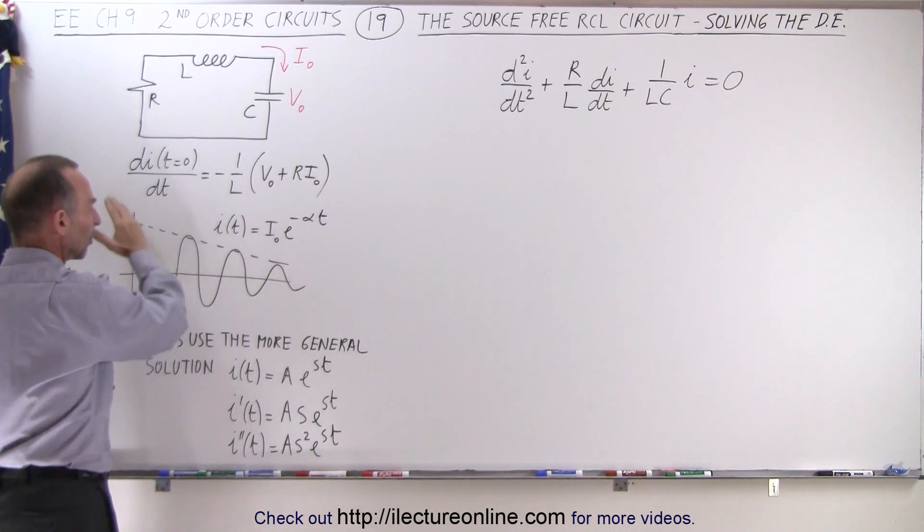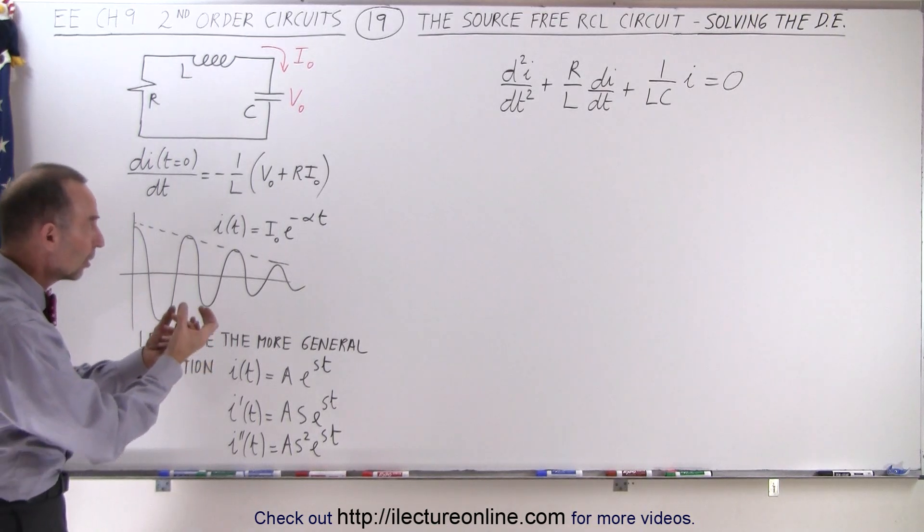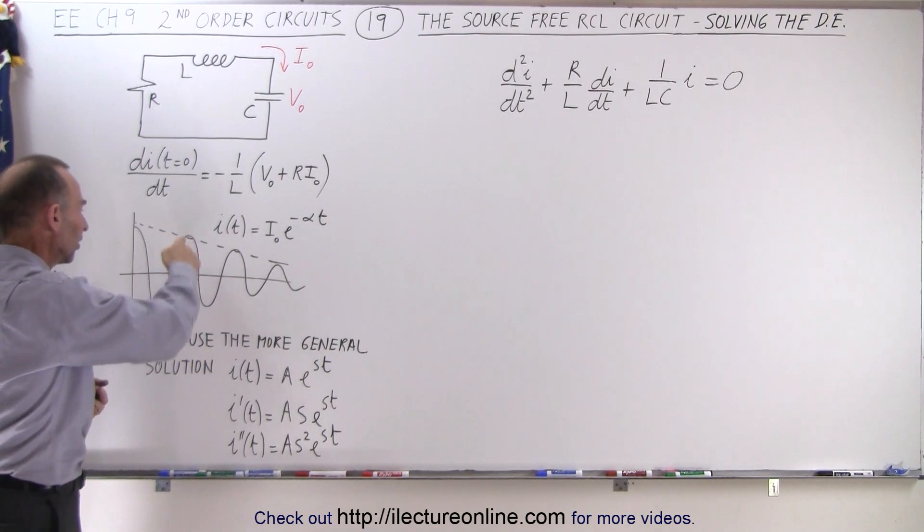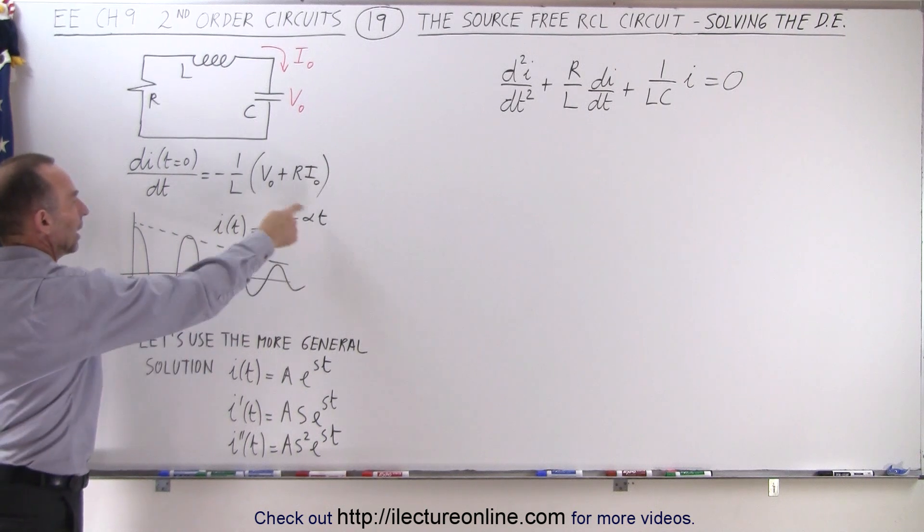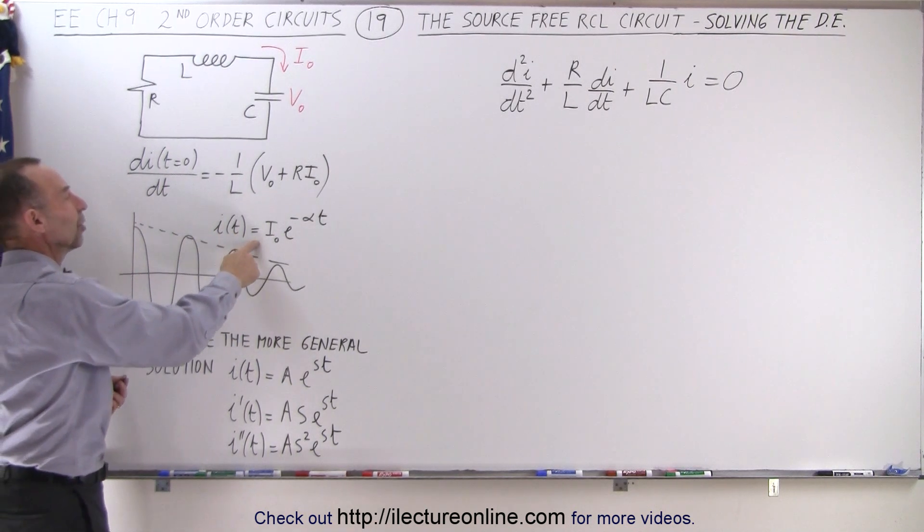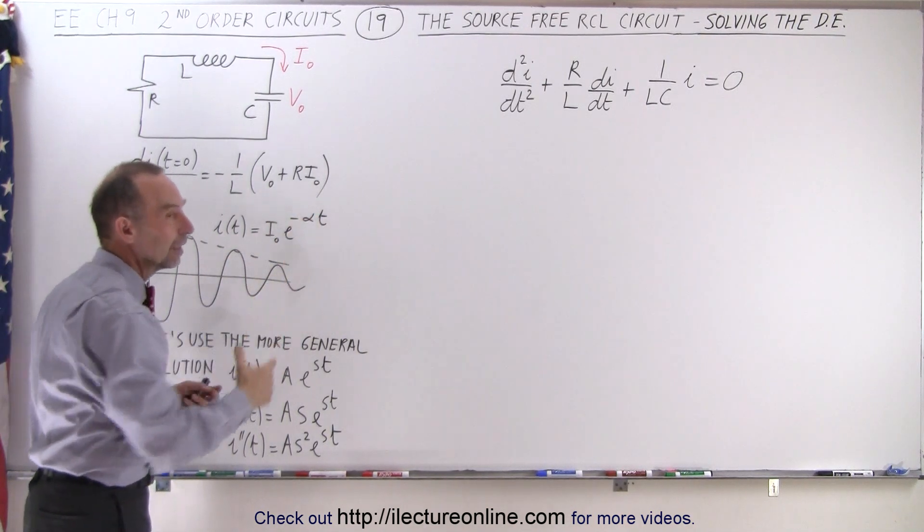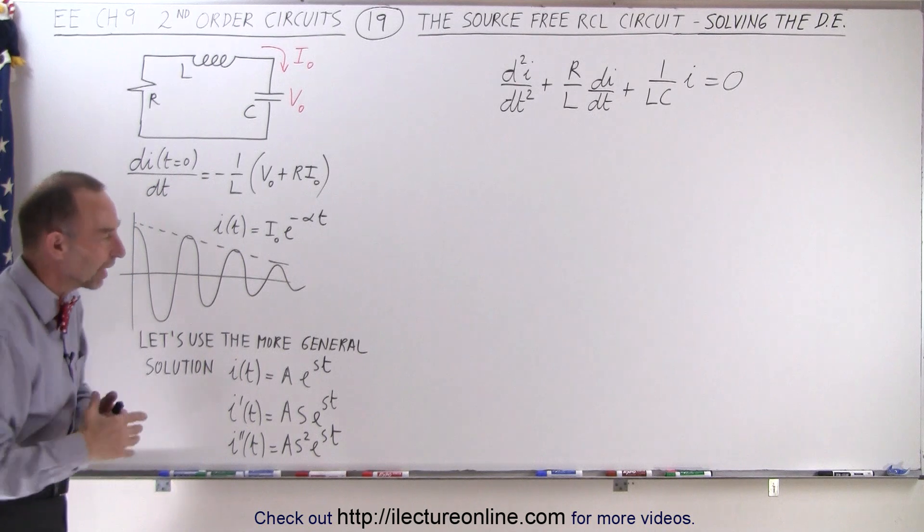And then we also realize that we're going to have a diminishing current because the resistor will take energy out of the circuit, so our current oscillations will diminish over time. The equation will look something like the current with respect to time is going to be equal to some initial current times e to the minus alpha t, where alpha depends upon the decay of that current.